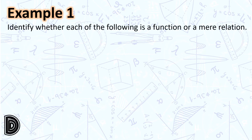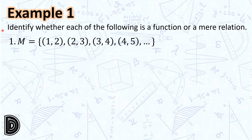Let us have some examples. Identify whether each of the following is a function or a mere relation. Number 1: Set M is the set of ordered pairs (1,2), (2,3), (3,4), (4,5), and the pattern continues. Notice that each value of x is related to exactly one value of y. Hence, set M is a function.